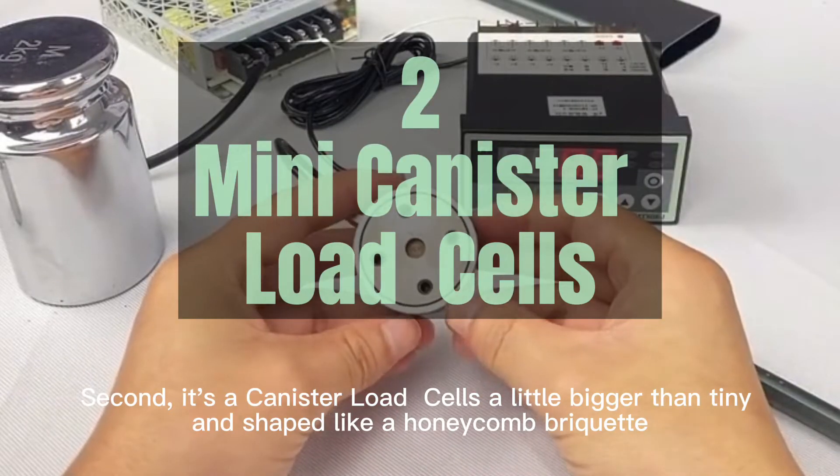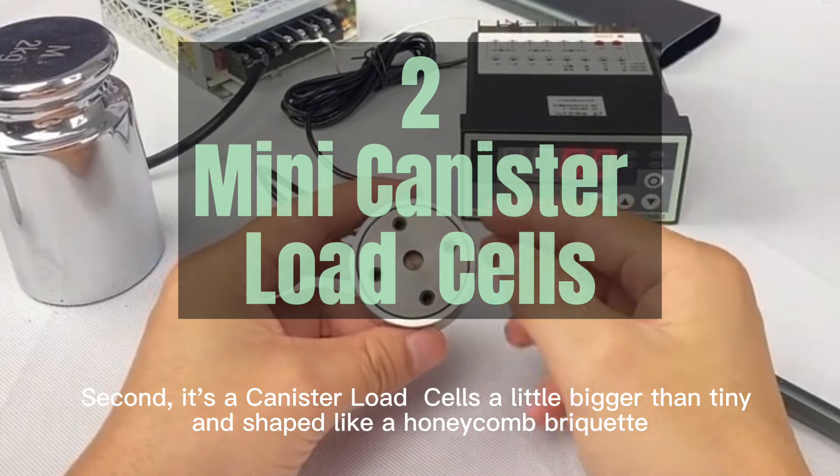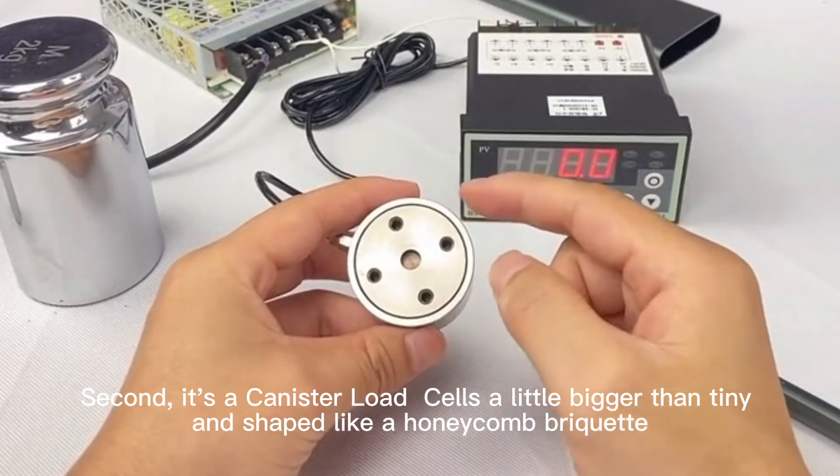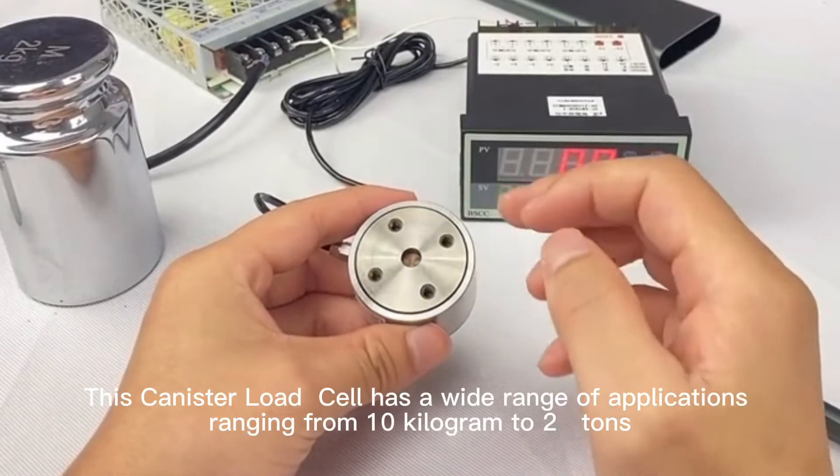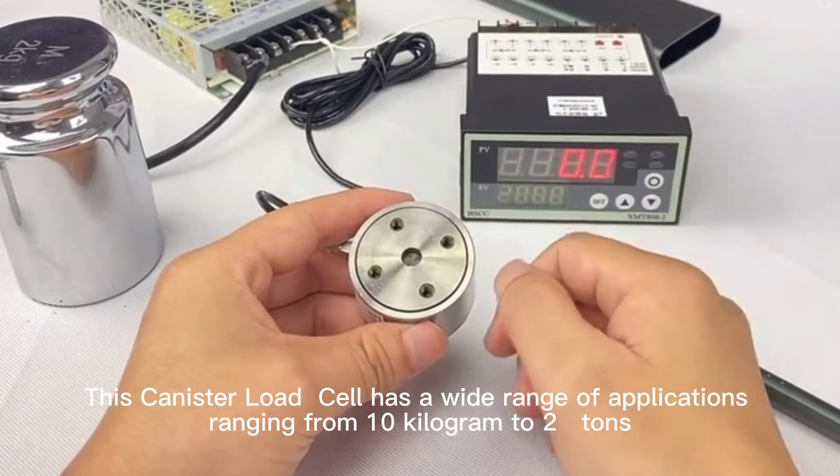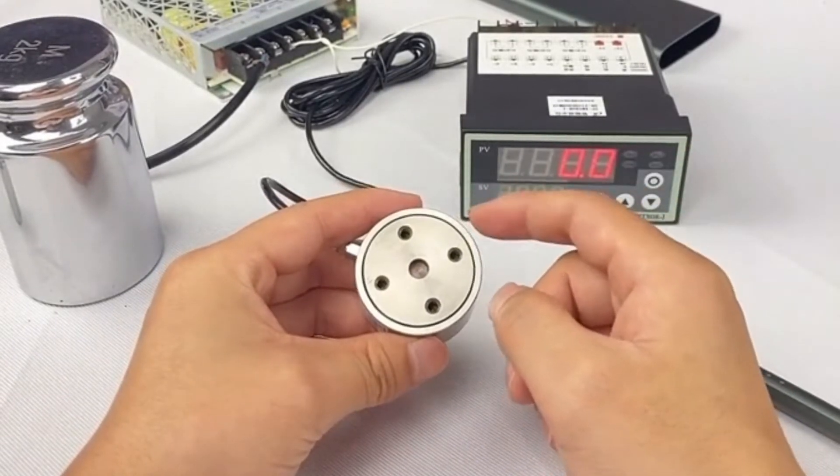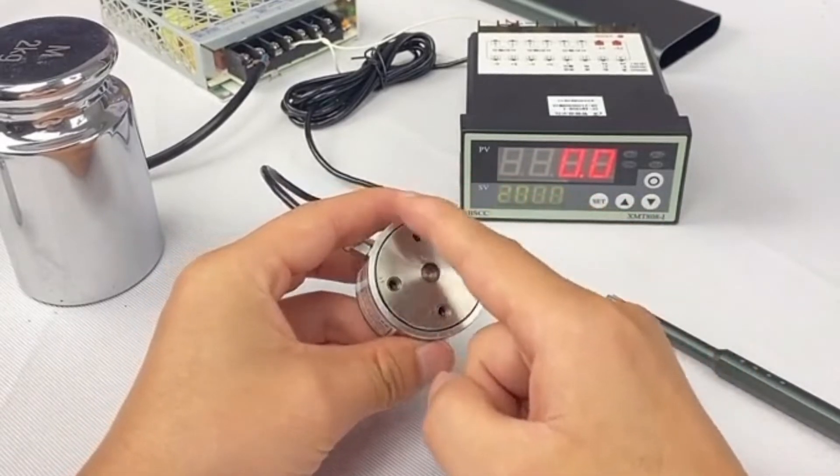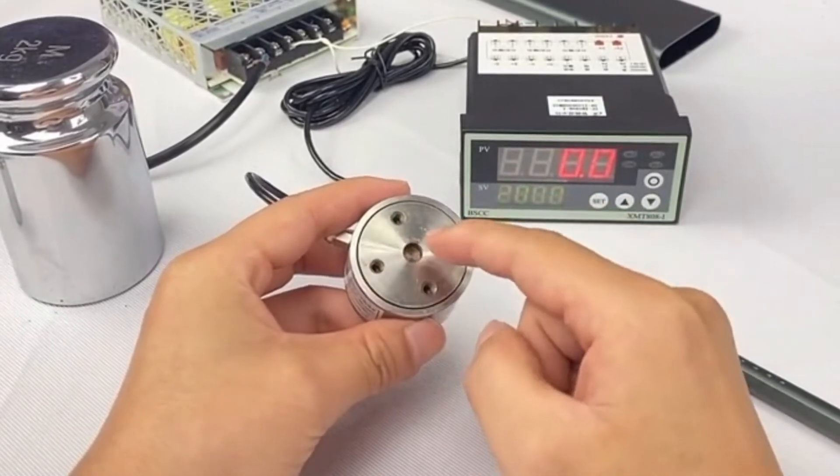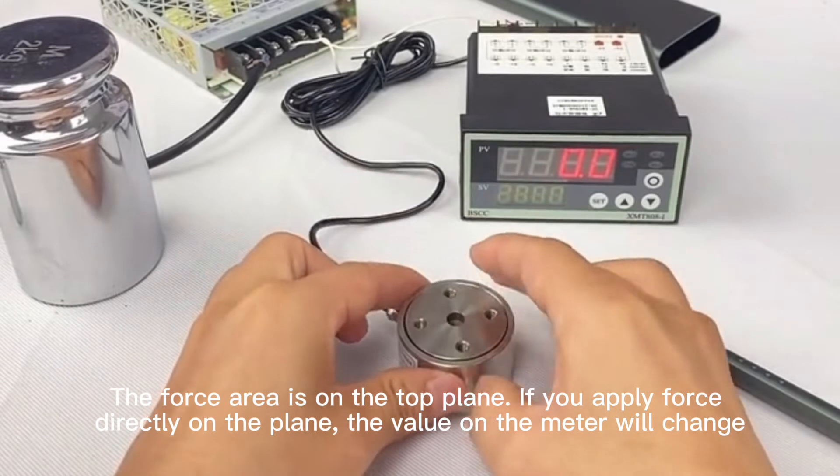Second, its canister load cells a little bigger than tiny and shaped like a honeycomb briquette. This canister load cell has a wide range of applications ranging from 10 kg to 2 tons. The force area is on the top plane.